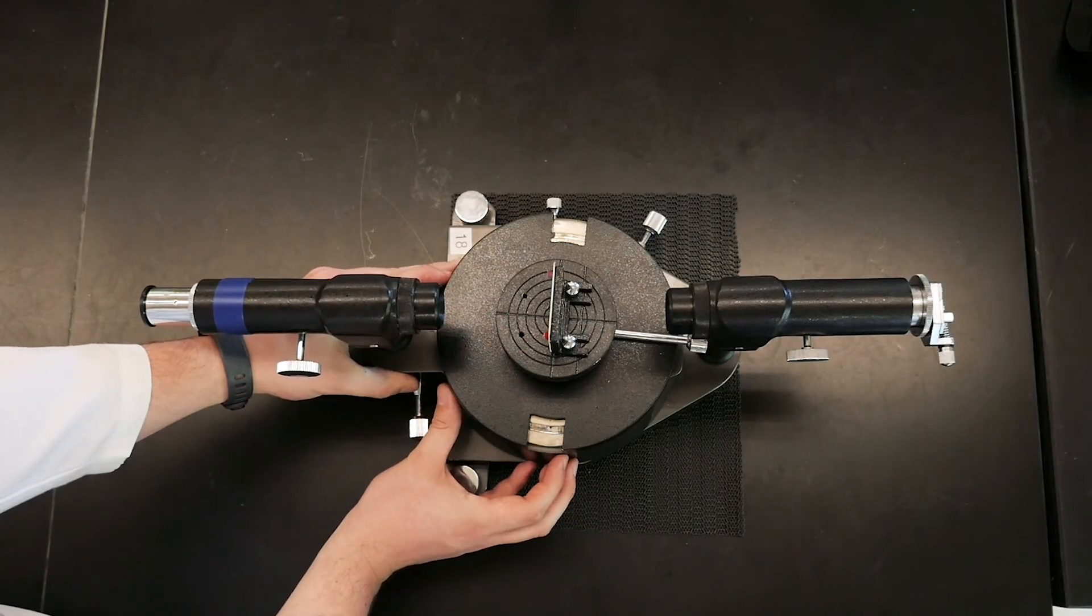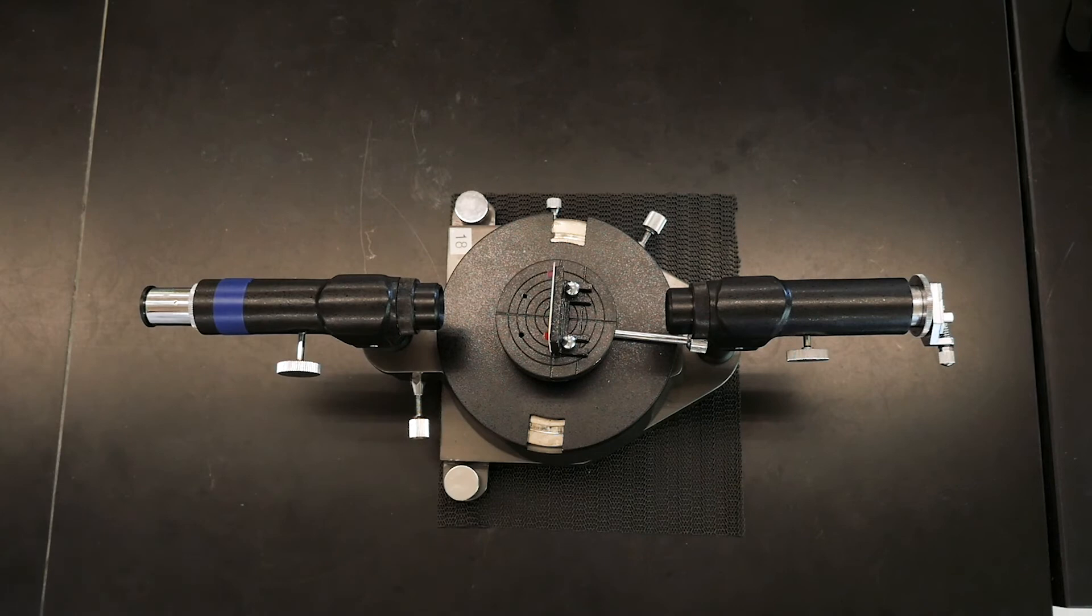Alright, now that the instrument is aligned, we'll need to make sure it's calibrated properly. That's because the amount of diffraction not only depends on the wavelength of light, but also the diffraction grating itself.